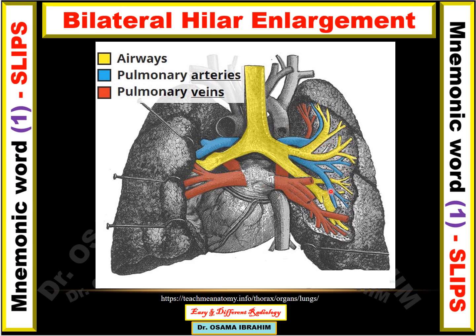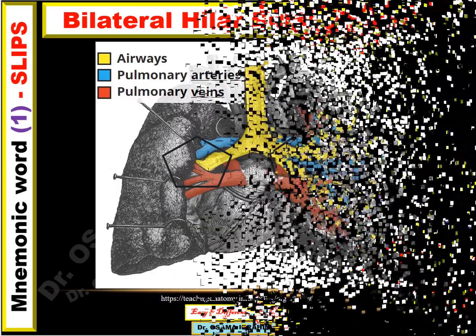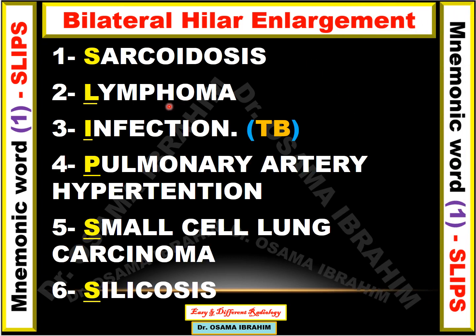So what is the differential diagnosis of bilateral hilar enlargement? Bilateral symmetrical hilar enlargement occurs with sarcoidosis; however, bilateral asymmetrical occurs with lymphoma. Unilateral hilar enlargement occurs in infections like TB, and if there is fibrosis or cavitation, it is also considered in the differential diagnosis.